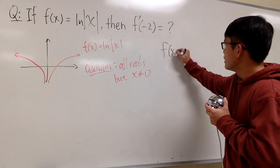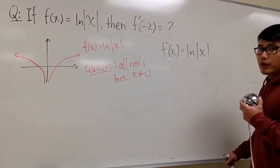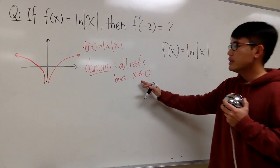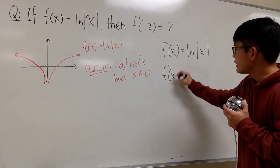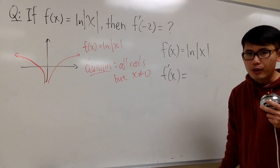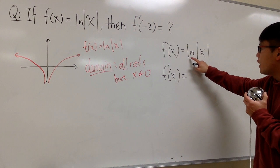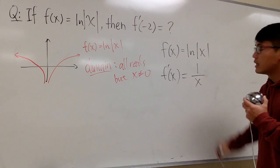If the function is the ln of absolute value of x, this right here, the domain is all real numbers, except for x is equal to 0. So, when you differentiate this, like that, seriously, you can just ignore the absolute value. The derivative of ln x is going to be 1 over x. This is it.